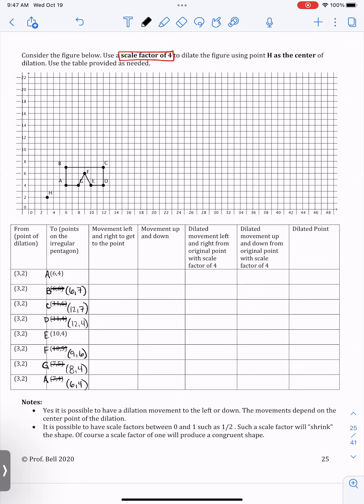So a dilation is a scaled image. We either take a pre-image and make it larger or make it smaller based on the scale factor that we're provided. In this example, we've been provided with a scale factor of four, which I boxed in red at the top of the page. This means that our final figure will be four times as large once we get to the final image.